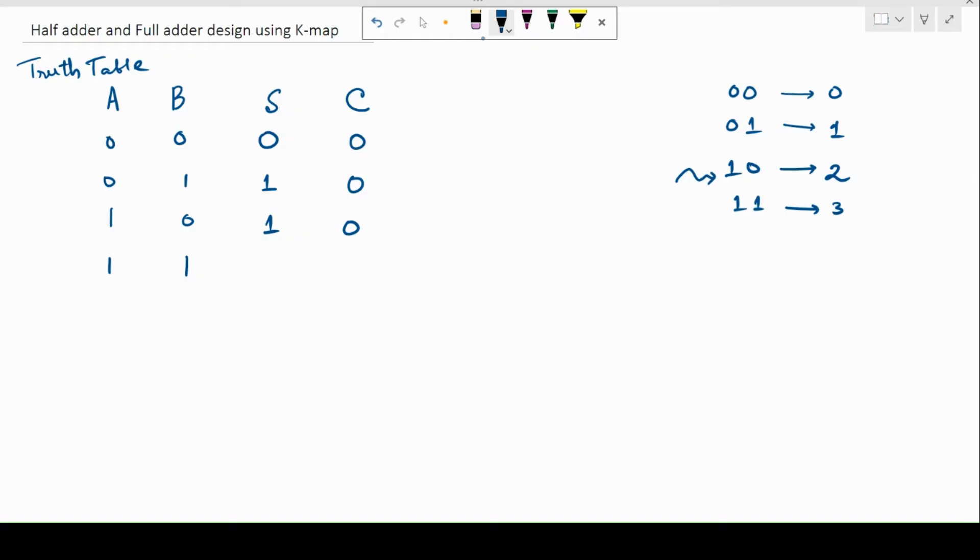So 2 basically is represented as 1,0. So now, we can only write 1 bit because there's only enough space for 1 bit to be held in the sum. So we are going to put down the 0 of the 2 here and the 1 of the 2 is going to go into the carry.